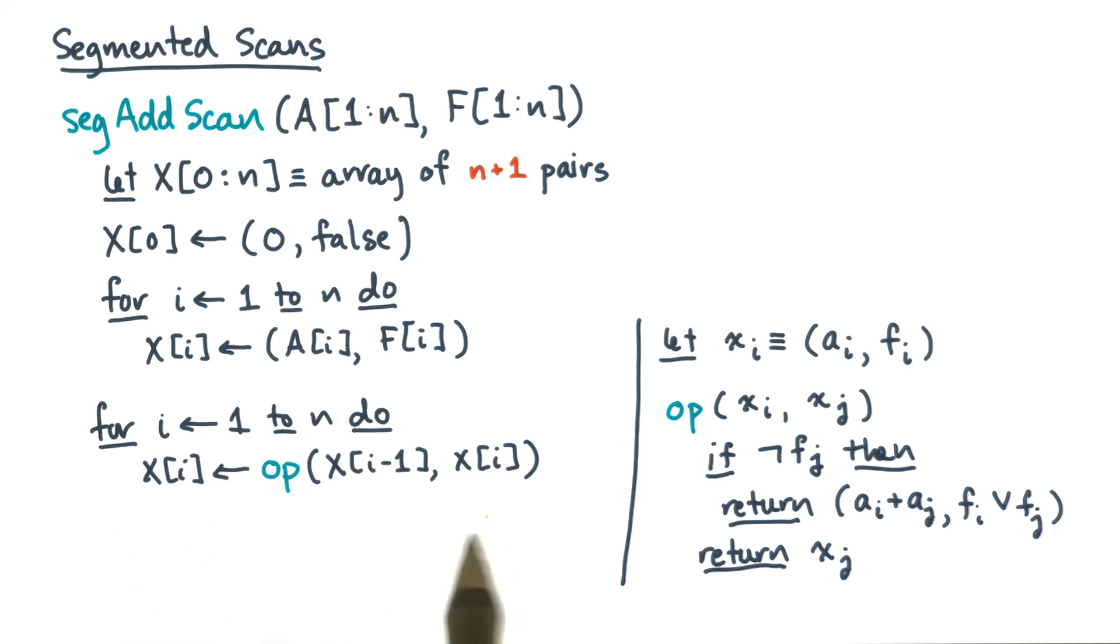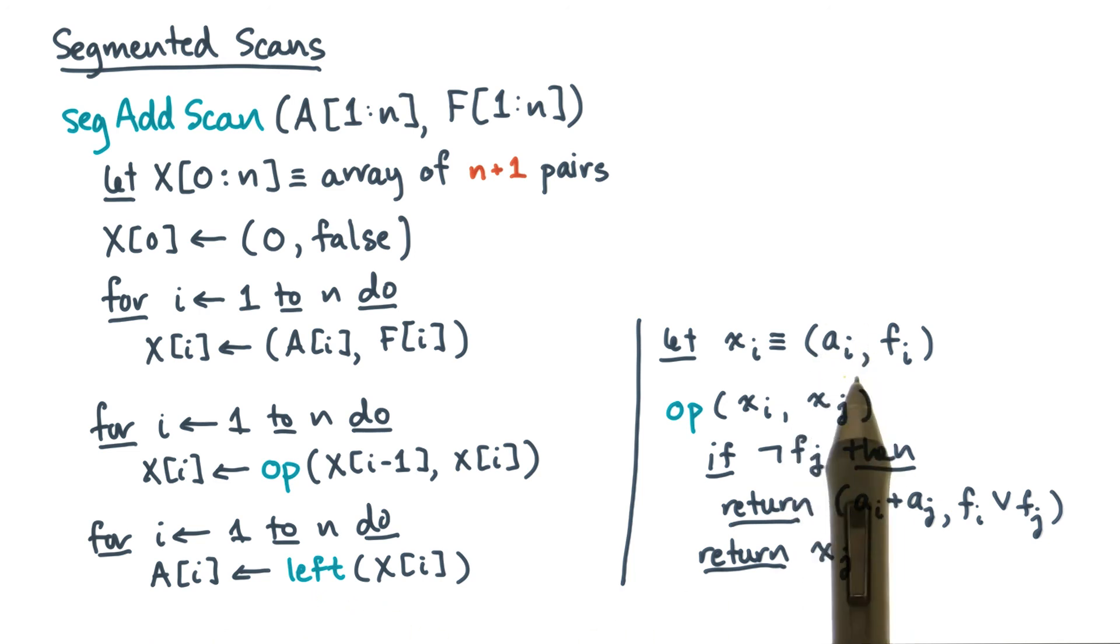And finally, the routine only needs to return the updated scan values. So there's a final little loop here to extract the leftmost element of each pair. The leftmost element being this guy. Now you should compare this new segmented scan with the old one and convince yourself that this new implementation computes the same thing.